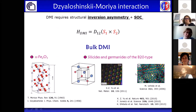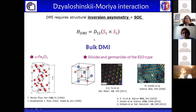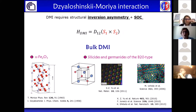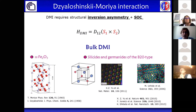As you already know, the Dzyaloshinskii-Moriya interaction is the anti-symmetric term of the exchange interaction, which is present in systems without inversion symmetry and having a large spin-orbit coupling. The Hamiltonian associated to the DMI between two neighboring magnetic spin moments is proportional to the cross product between the two spin moments, where the Dzyaloshinskii-Moriya vector is proportional to the spin-orbit coupling. The DMI favors non-collinear alignment between neighboring spins and promotes the formation of chiral spin structures.